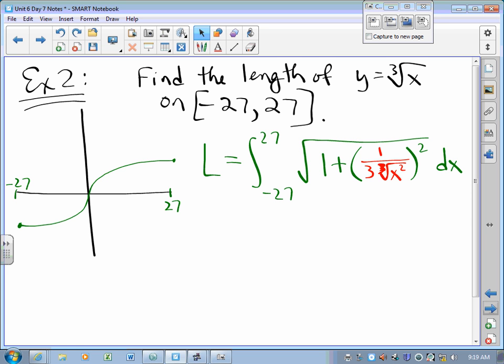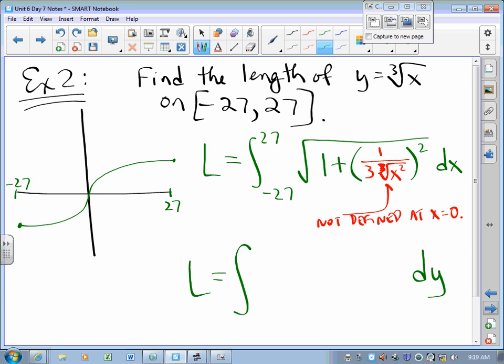That derivative does not exist for all values of x in our interval. This is not defined at x equals 0. And so I cannot use this arc length integral to find an arc length over any interval that includes 0. And so I think to myself, is there another way? And the answer is yes. We could do a dy integral. We could go from negative 3 to 3.